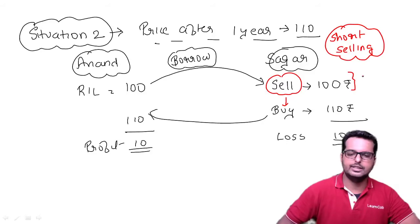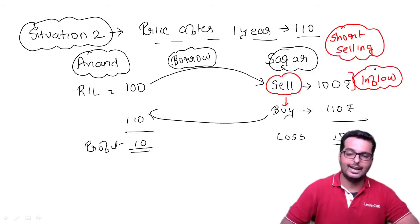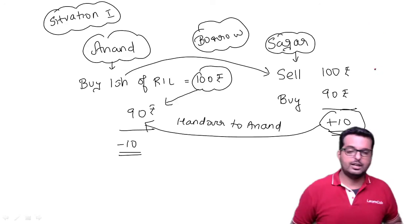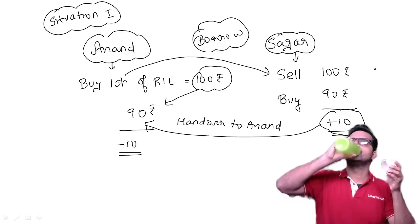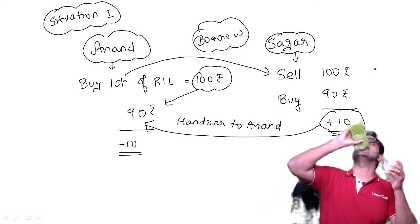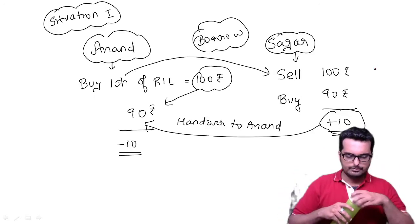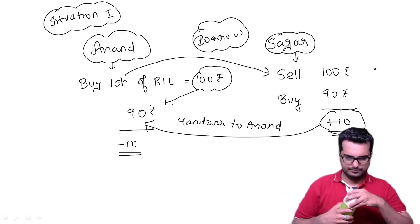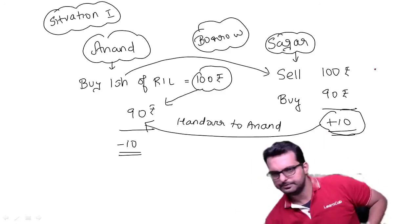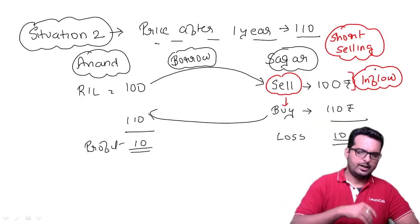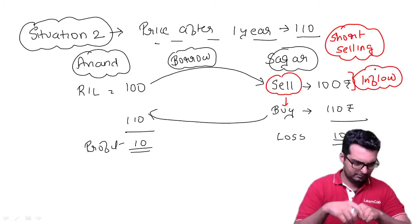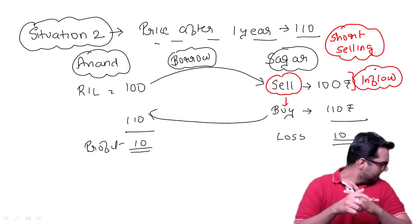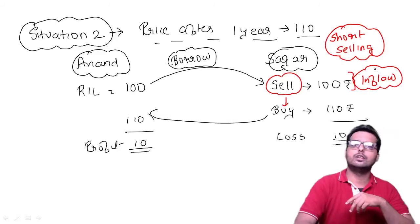Basically, Sagar gets an advantage — he gets the money in his hands today itself, it becomes an inflow for him. We have now learned the concept of short selling. Shall we now go to the next concept?